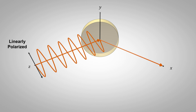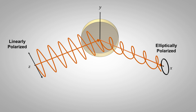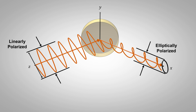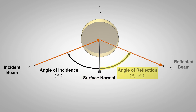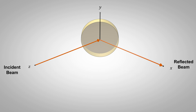It is possible for a beam's direction, polarization state, and amplitude to change after reflection from a metallic mirror. All three parameters are affected by the beam's angle of incidence, which is defined by the incident beam and the normal to the mirror surface. The angle of reflection equals the angle of incidence and is measured from the opposite side of the surface normal. Light's polarization state is defined using the plane of incidence, which is based on the directions of the incident and reflected beams.